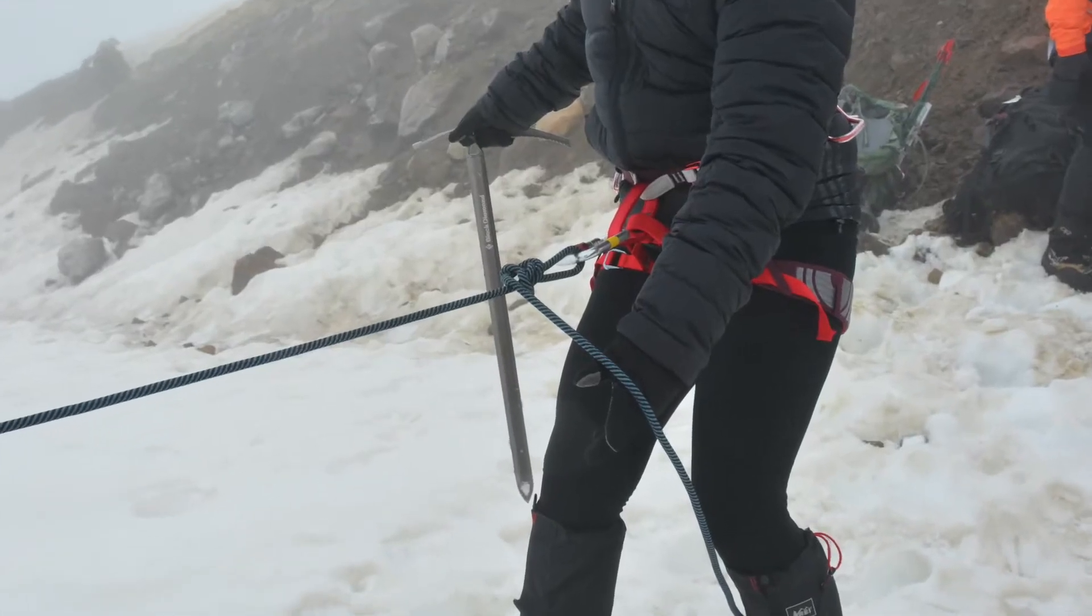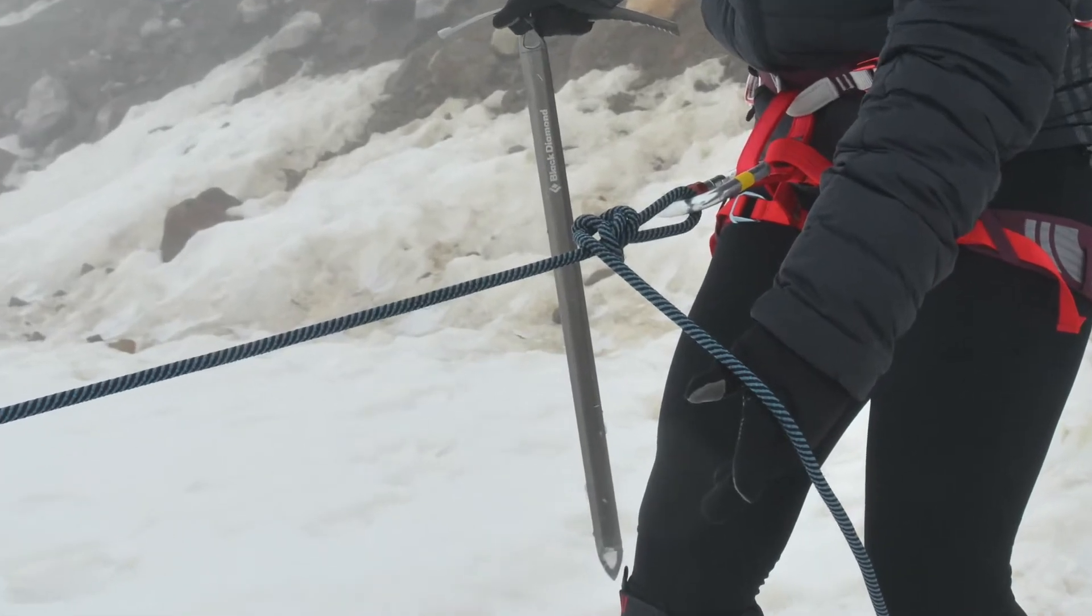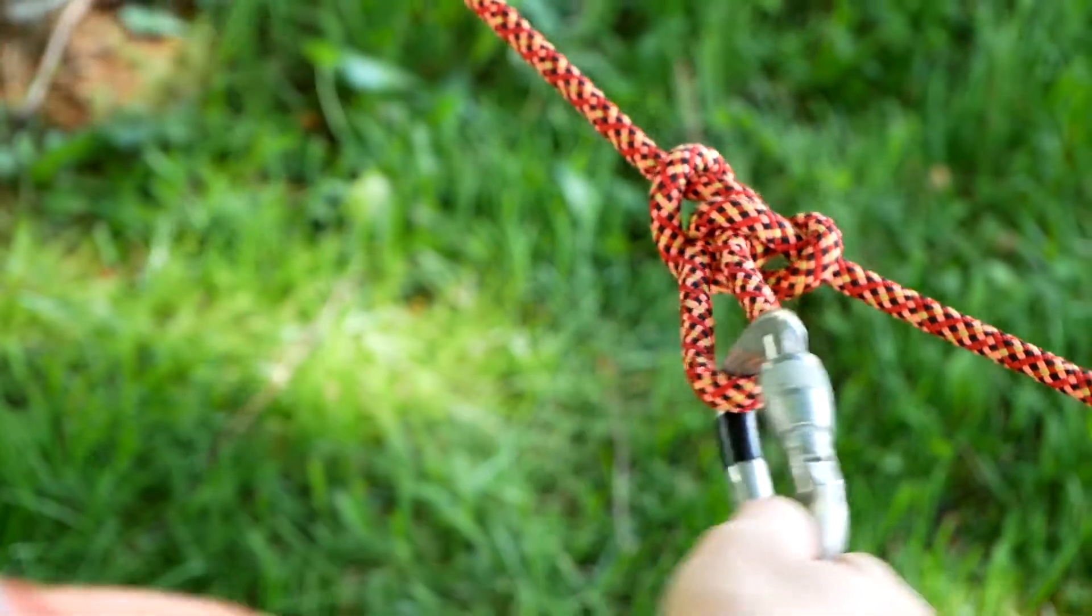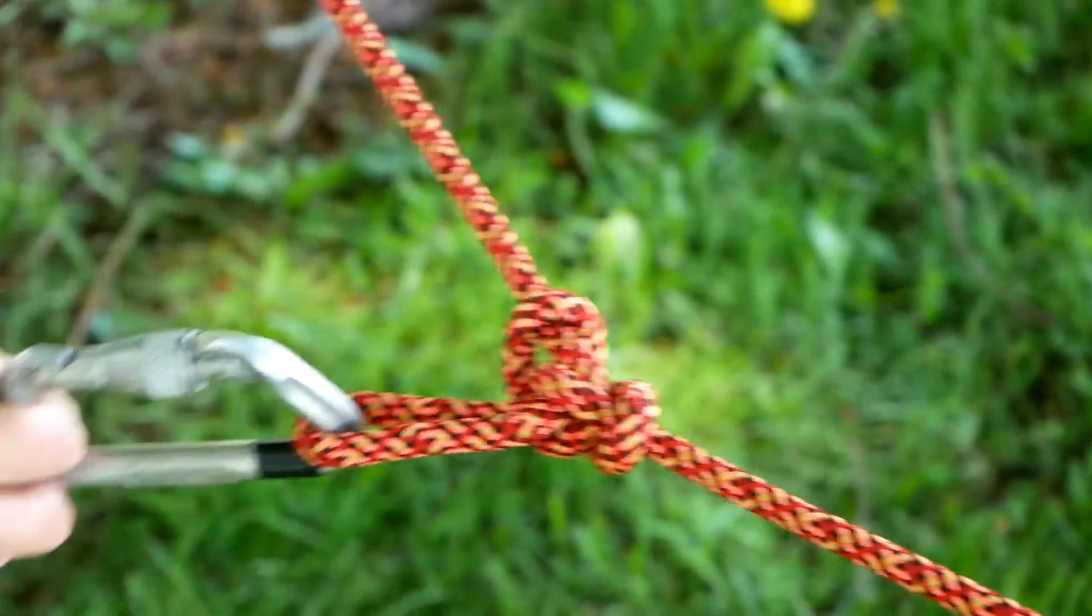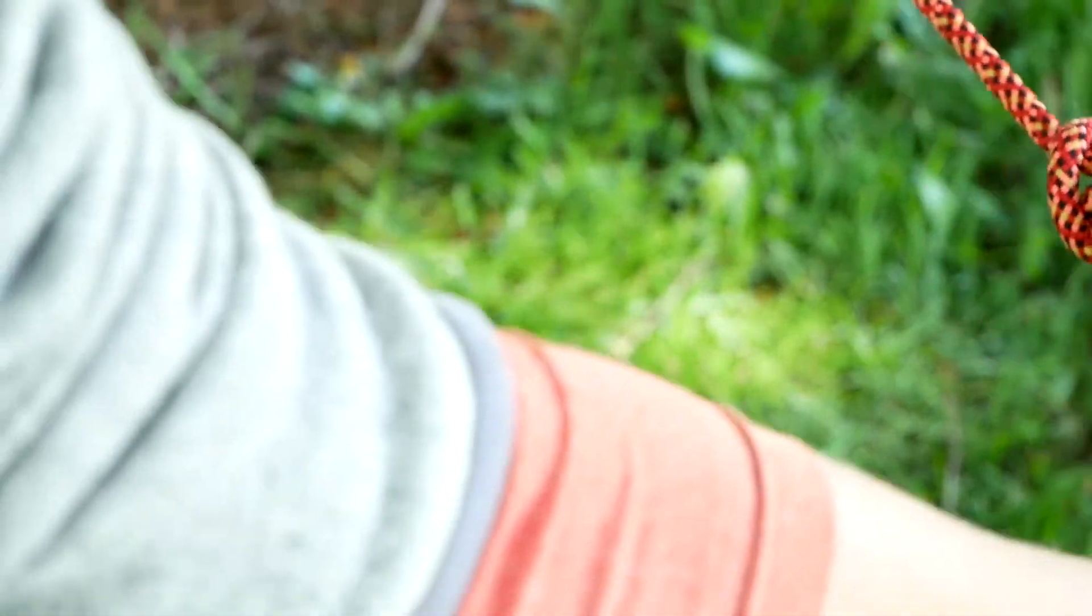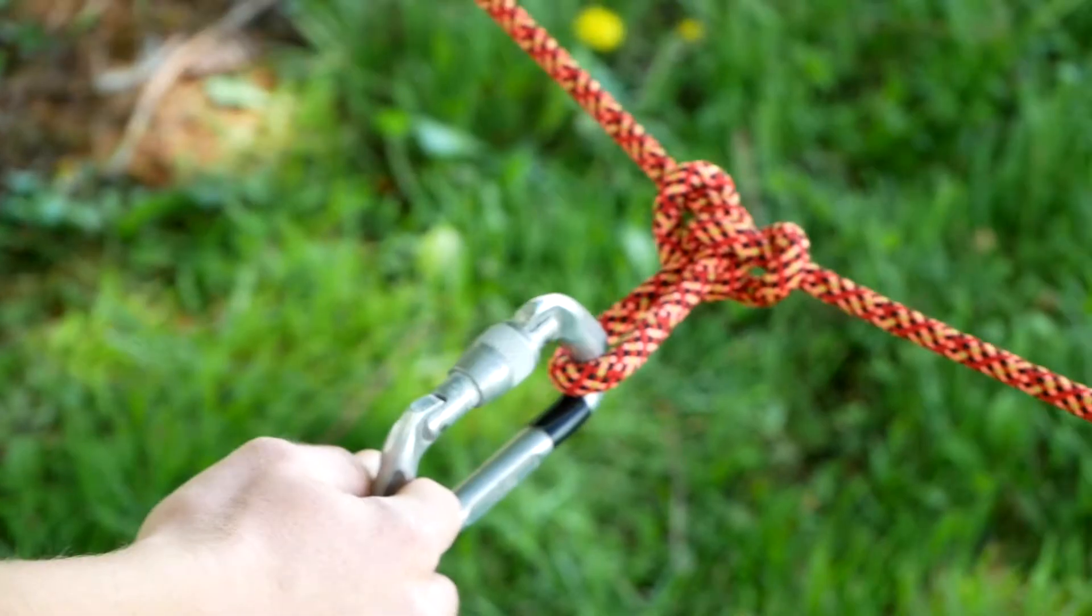The alpine butterfly is a great knot to use when attaching something to the middle of a rope. It will sustain a pull in either direction and will not come undone. When used in the alpine environment, it is commonly used with a locking carabiner.